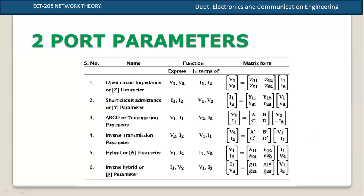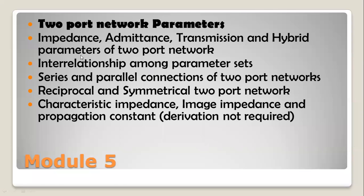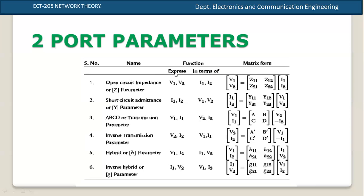The value of the four parameters in matrix form and the inter-relationship among parameter sets — in terms of impedance parameters, admittance parameters, ABCD, and hybrid parameters — let's go through the different parameters.